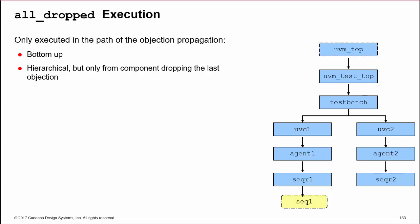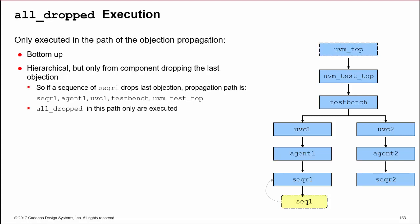So if a sequence of sequencer SEQR1 drops the last objection, only all_dropped implementations in the path SEQR1, Agent1, UVC1, TestBench and UVMTestTop are executed. No all_dropped implementations under UVC2 are executed.